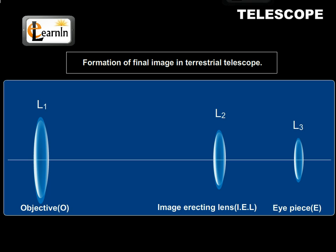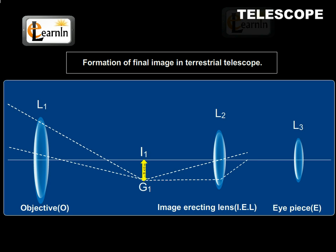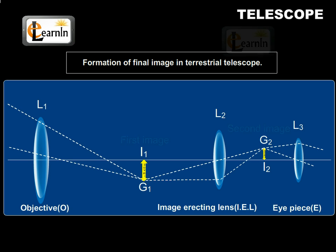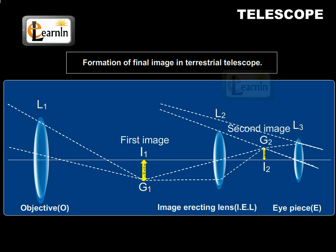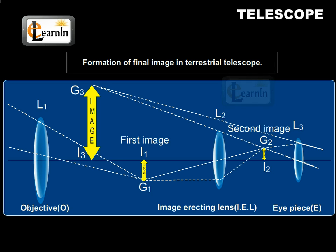I1G1 and I2G2 represent the first and second images respectively. I3G3 represents the final erected image.